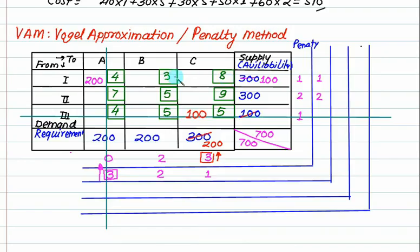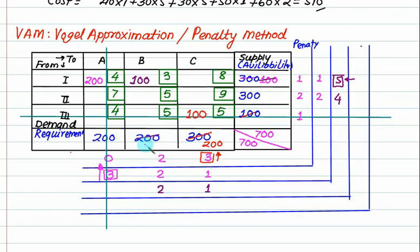Next column: 3 and 8 — penalty is 5. Next: 5 and 9 — penalty is 4. No allocation here. Values are 100, 100, 100, 100. Cost 5 and 3 — penalty is 2. Cost 8 and 9 — penalty is 1. Maximum penalty is 5, so go to the row side. Minimum cost is 3. Can we allocate maximum 200, or only 100? We can allocate 100. This value and this value are both 100, so we strike out row 1.